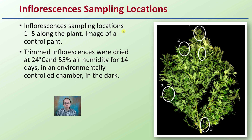They also looked at inflorescence or bud sampling locations, one through five, shown on the plant. This is an image of a control plant — which basically didn't have pruning — just to give an idea of where that sampling occurred. Trimmed inflorescence was dried at 24 degrees Celsius and 55% air humidity for 14 days in an environmentally controlled chamber in the dark, giving you an idea of their drying and curing process.